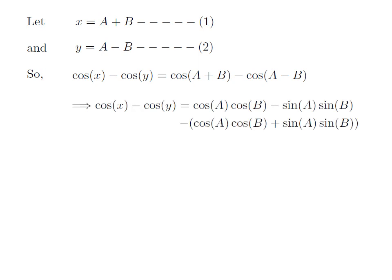Now I have expanded cosine of a plus b and cosine of a minus b. So, cosine of x minus cosine of y is equal to cosine of a into cosine of b minus sine of a into sine of b — this is the expansion of cosine of a plus b — minus cosine of a into cosine of b plus sine of a into sine of b, which is the expansion of cosine of a minus b.